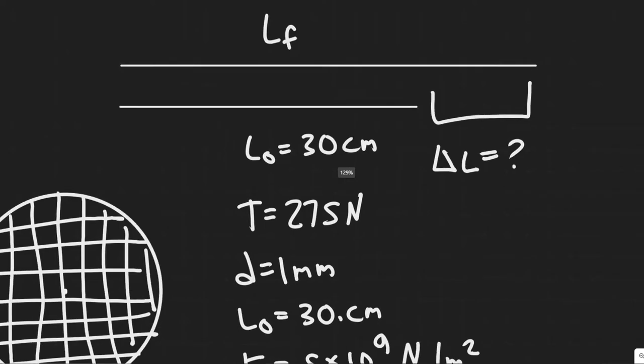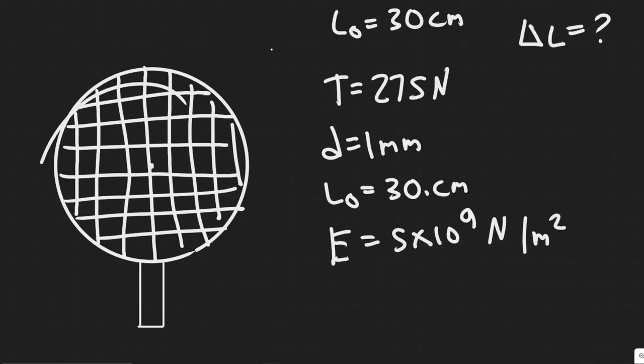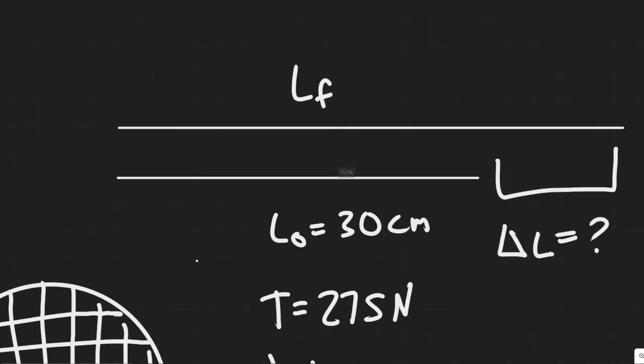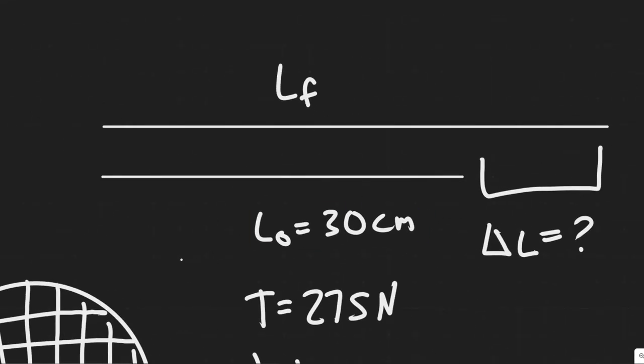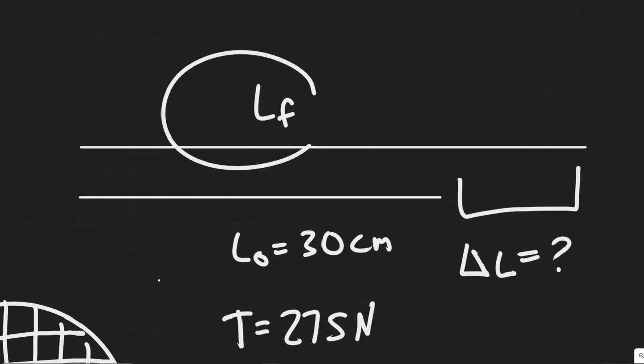So essentially here, we have this nylon string from this tennis racket here. So we can imagine this right here is its string. And we know when there's no tension force pulling on it, its length is just 30 centimeters.